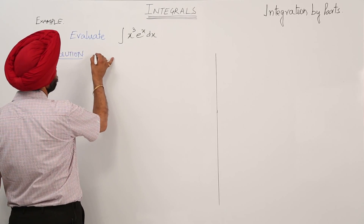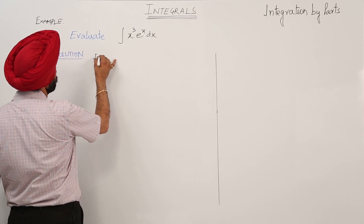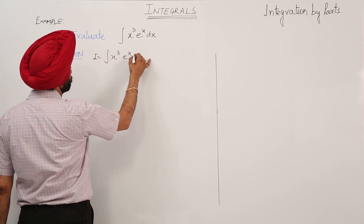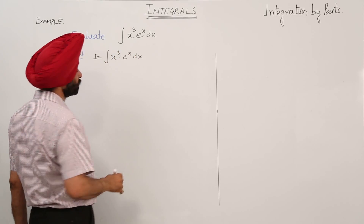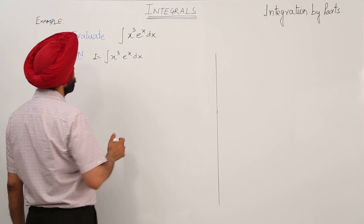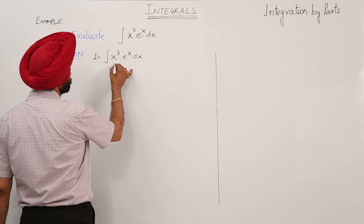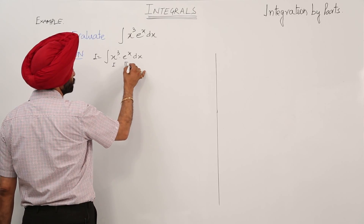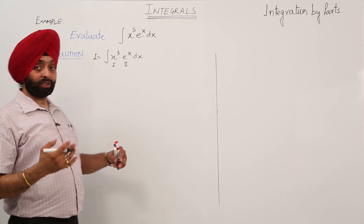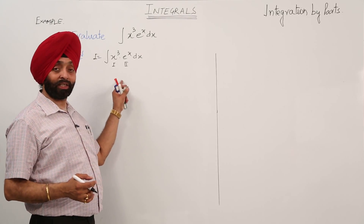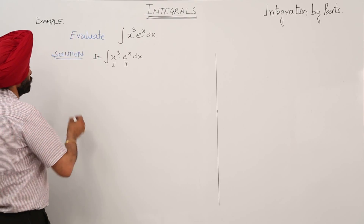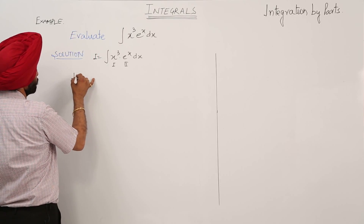In this question we are having x cube e raise to power x dx. Now according to the LIATE technique, we are going to take x cube as the first function and e raise to power x as the second function. Now we will start solving by integrating by parts.